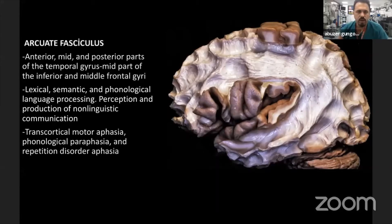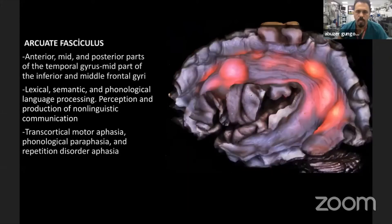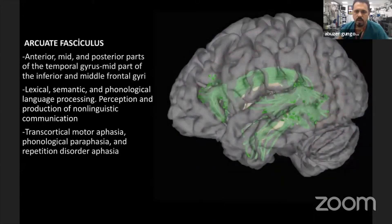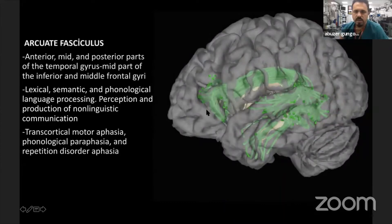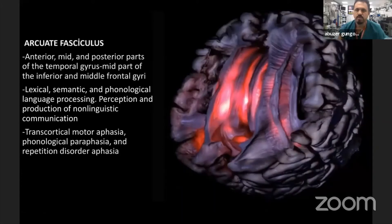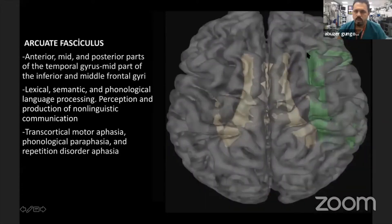The most well-known fiber bundle is the arcuate fasciculus. It connects the frontal lobe to the temporal lobe and is related to language. You can see its relationship with the ventricle and its related cortical areas — from frontal pars triangularis and pars opercularis to the anterior part of the temporal gyri. From the superior view, you can see the arcuate fasciculus lying lateral to the ventricle.